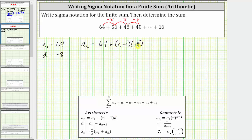Now we will simplify by distributing negative 8 and combining like terms. A sub n equals 64, and now we will distribute negative 8. So we have plus negative 8 times n, which is plus negative 8n, or just minus 8n.